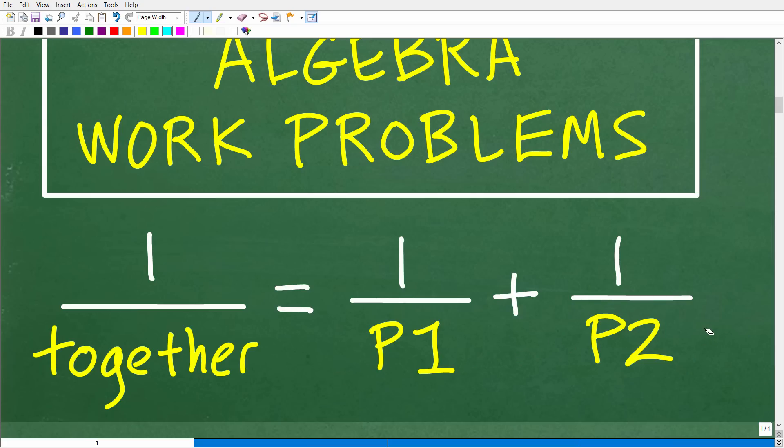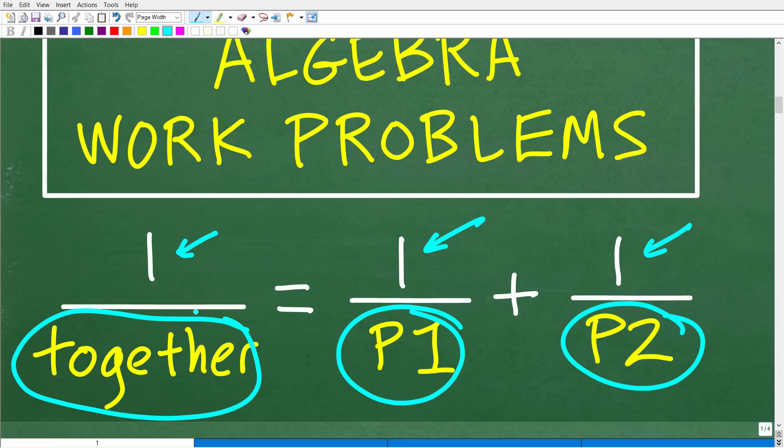If they're working together, it's going to follow this formula here: one over how much time it takes them together. So this is the formula that you need to understand. And if you didn't understand this formula, of course it will be kind of confusing because really what we're trying to think about here is the concept of one. This is completing one job. For example, Dan can complete one job of digging a hole in X amount of time, and John can complete one job of digging a hole in this amount of time.